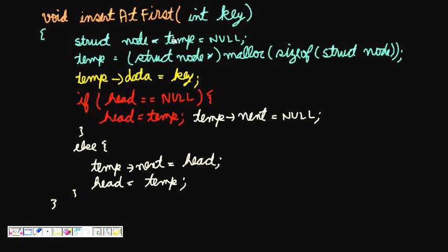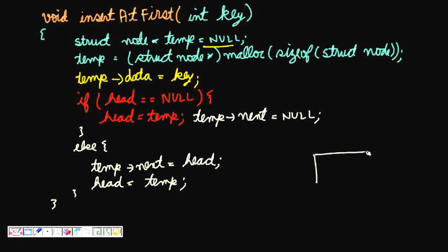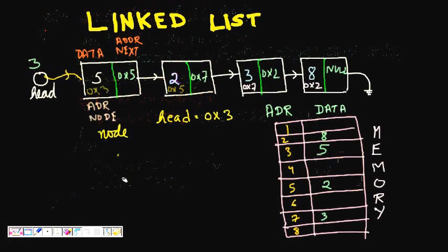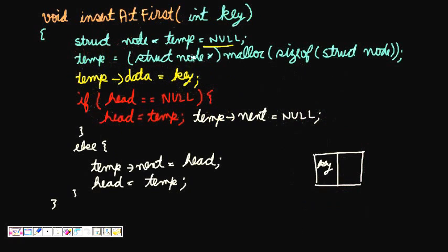Now we write the function `insertAtFirst(int key)`, where we pass the key we want to insert at the beginning. We declare `struct node *temp = NULL`. To create a new node, we allocate memory using malloc: `malloc(sizeof(struct node))`, and type-cast it to `struct node *`. This gives us one new memory location.